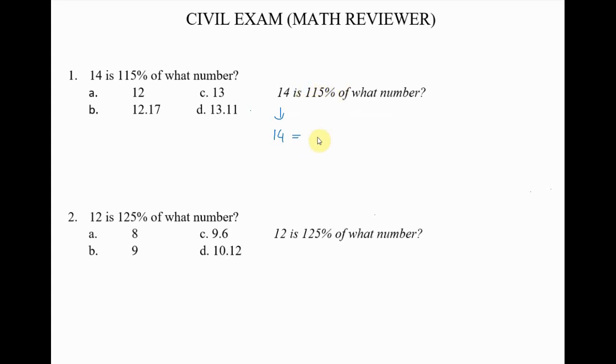So if we divide it by 100 we have 1.15. 'Of' is represented by multiplication and 'what number' we will say, let's say n. So what do we have here? 14 is equal to 1.15 times n.